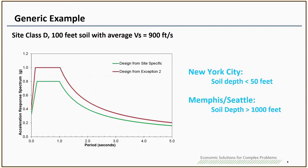Another thing to keep in mind: this is a generic case with 100 feet of soil, but many areas in the U.S. don't have exactly 100 feet of soil. For example, in New York City the soil depth is typically less than 50 feet. But if you go to Memphis and Seattle, the soil depth can be much greater than 1,000 feet. All these soil columns will impact how the response spectrum looks. Unfortunately, the building code tries to envelope all the cases for design — which means it is very conservative. So for those cases, I highly recommend you do the site response analysis to determine your seismic loading.